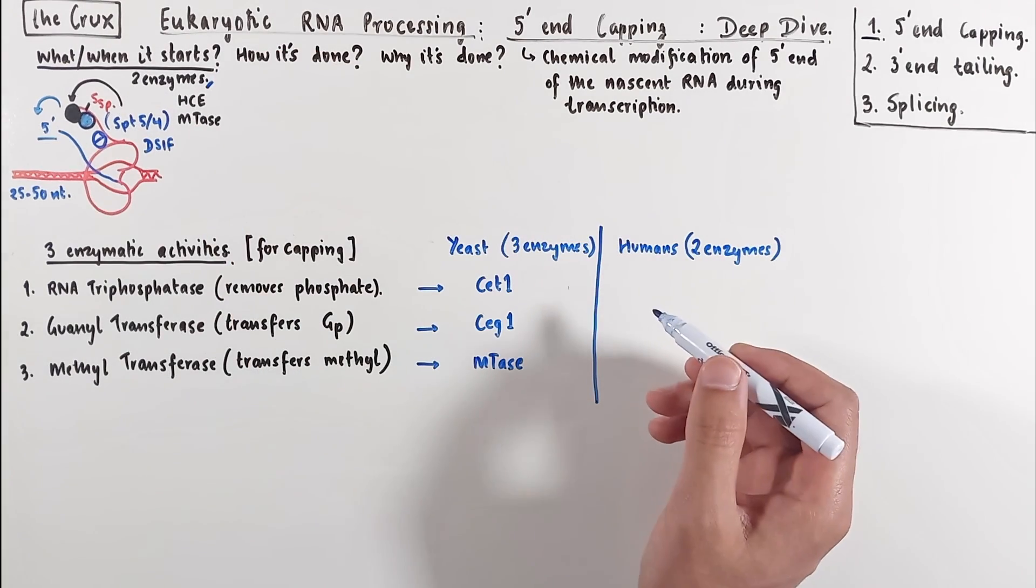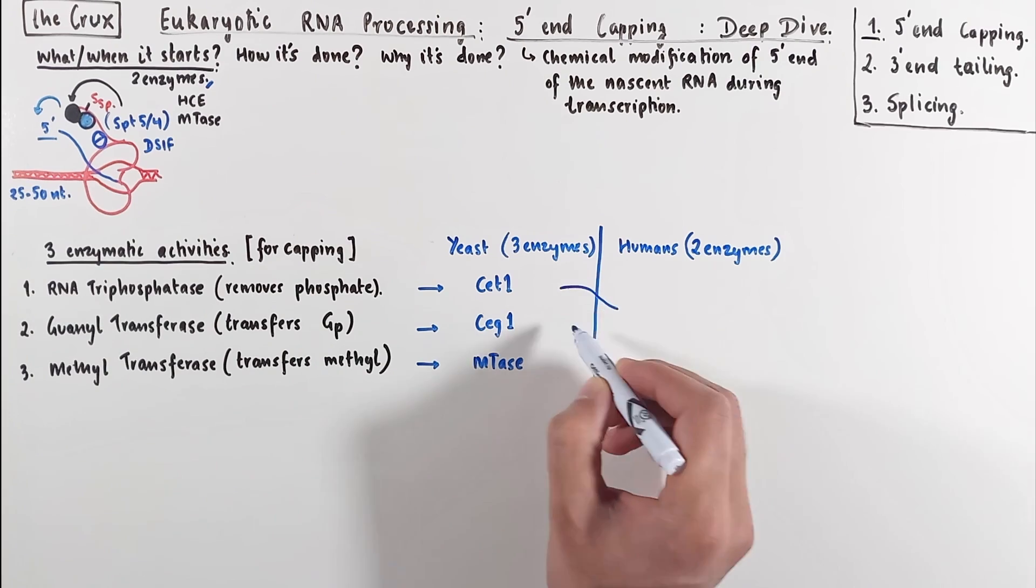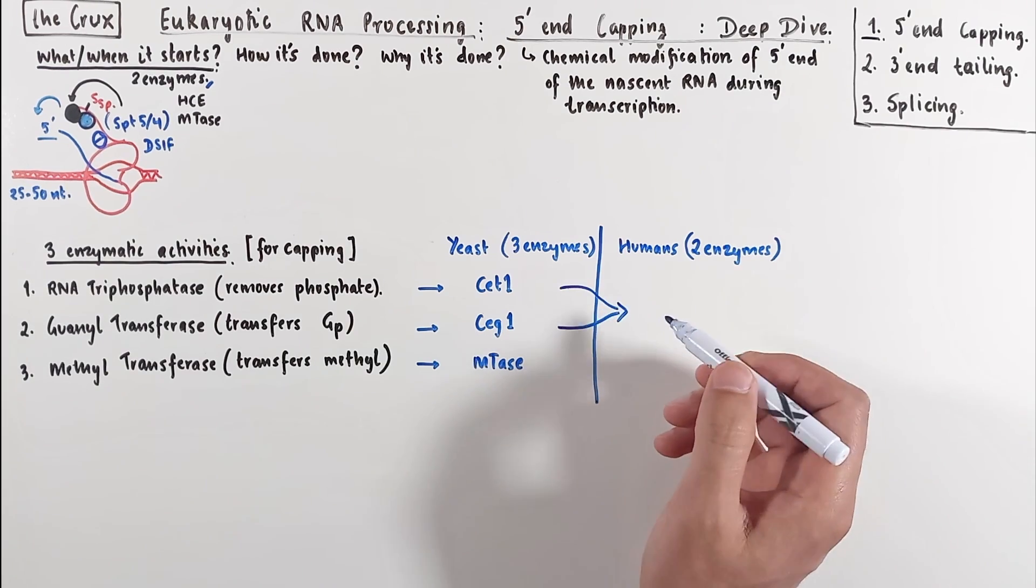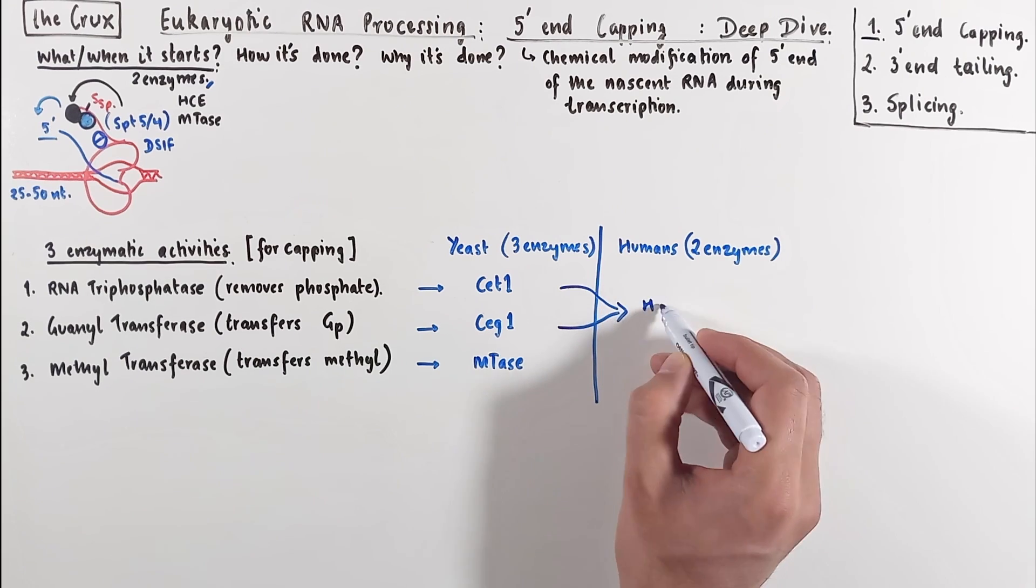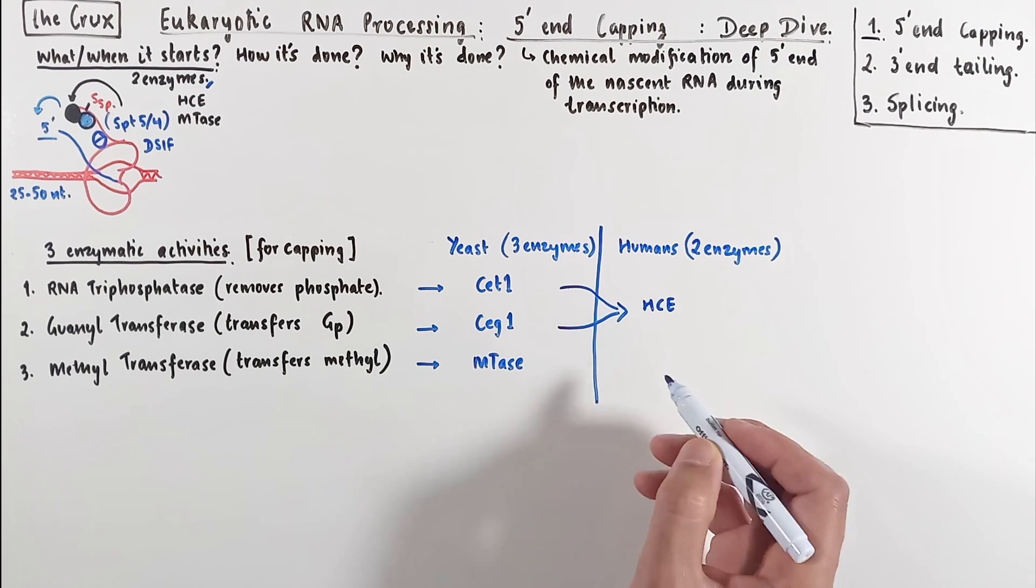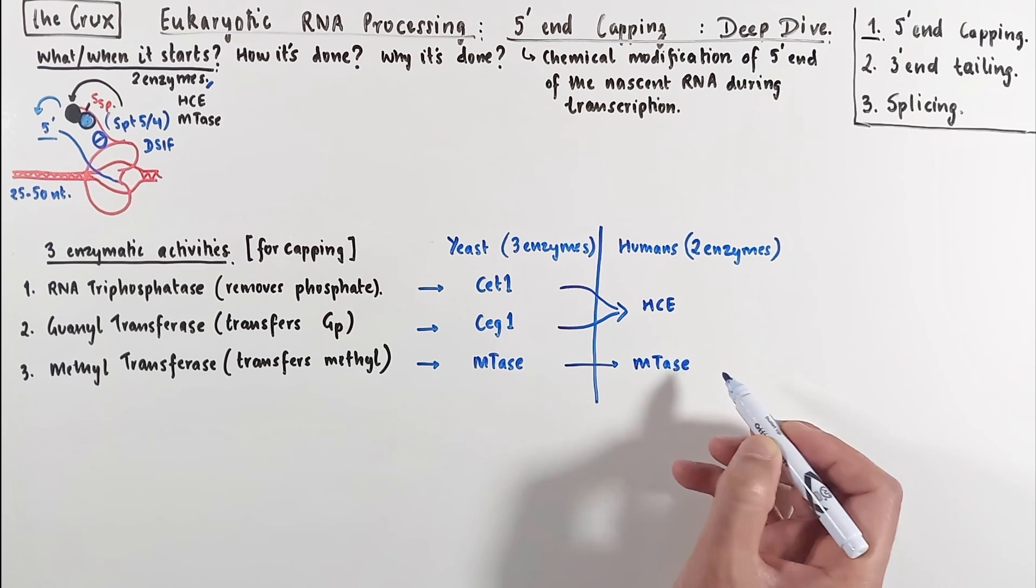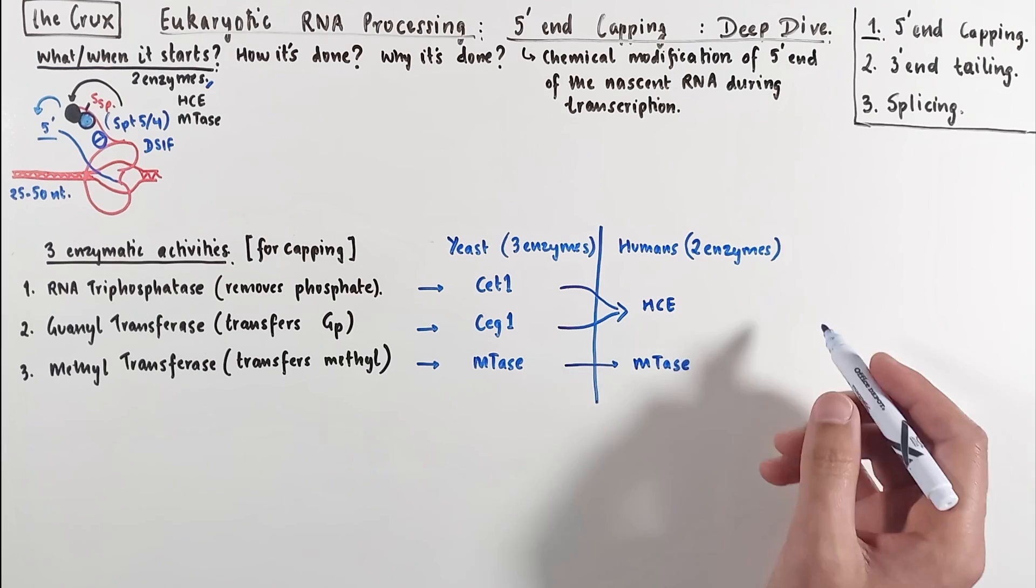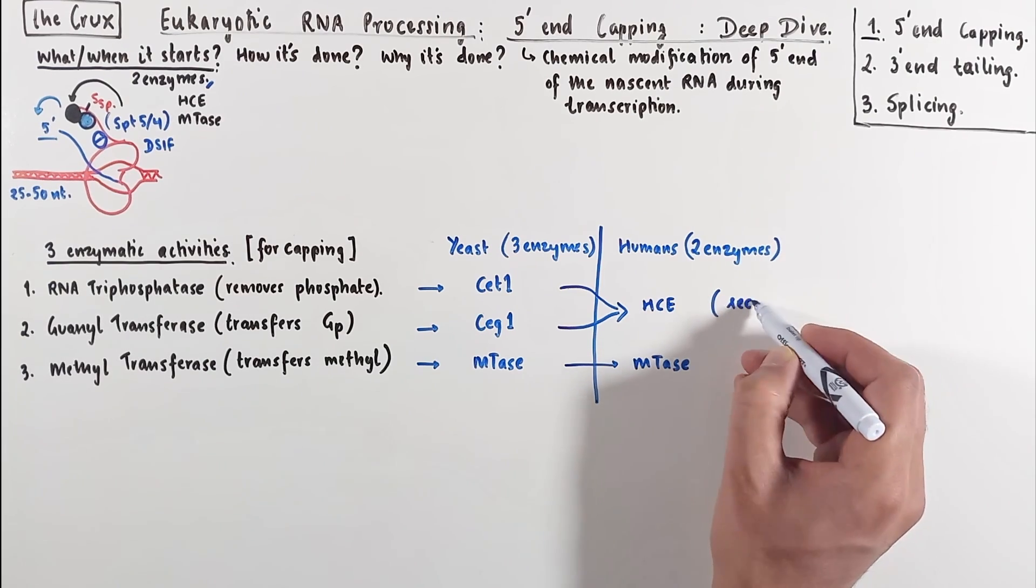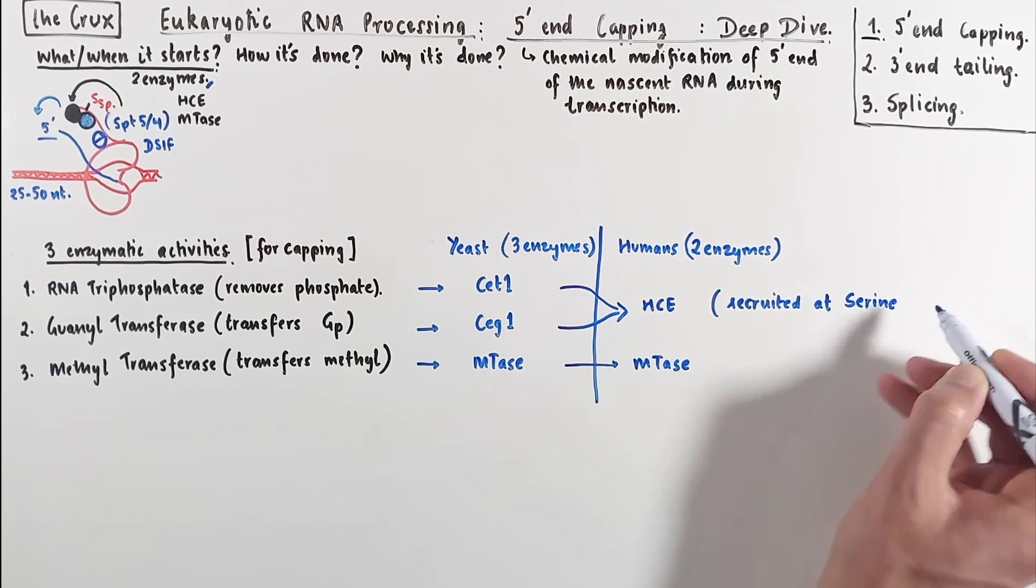Essentially the triphosphatase and the guanyltransferase activity in humans is done by the same enzyme, and that is known as the human capping enzyme, HCE. And the methyltransferase that we have is not very different from the yeast methyltransferase. This capping enzyme is recruited, as noted before, at the serine 5 phosphate on the C-terminal domain.